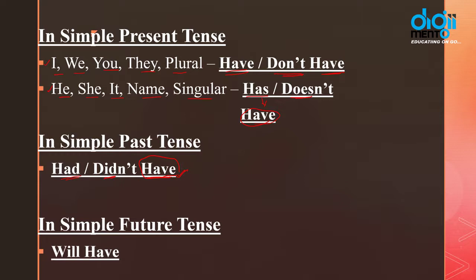Then in case of a simple future tense, our helping verb is 'will' and the verb form we use is 'have'. I will have done this, or I will have a pen, I will have this. So with 'will', again, irrespective of the subject — singular or plural — we use 'will have'.